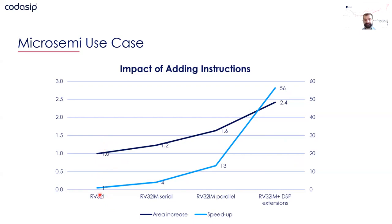Then we enabled more items, starting with standard extensions. We enabled the M extension with two implementations: one more power-friendly and one more performance-friendly. The basic version with the M extension and a sequential multiplier already shows a speedup, with a modest area increase. Going with the parallel multiplier gives a speedup of already 13x, with a comparably low area increase.